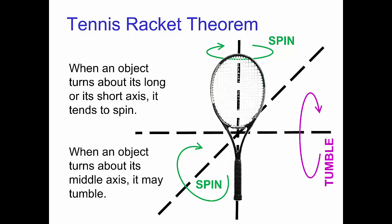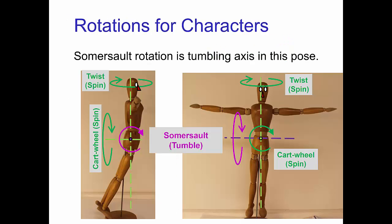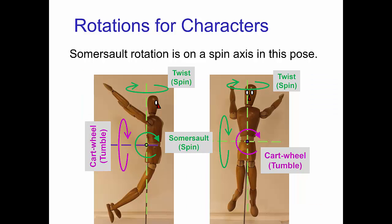These axes change depending on the shape of the object or the pose of the character. In a T-pose, a twist rotation and a cartwheel rotation are stable spinning, but a somersault in this pose results in unstable tumbling. However, by sweeping the arms and legs back, the somersault is stable. This is one pose used by gymnasts, divers, and trapeze artists when performing somersaults.